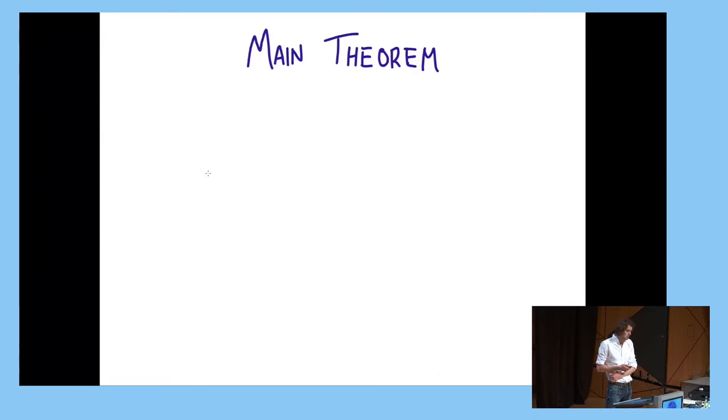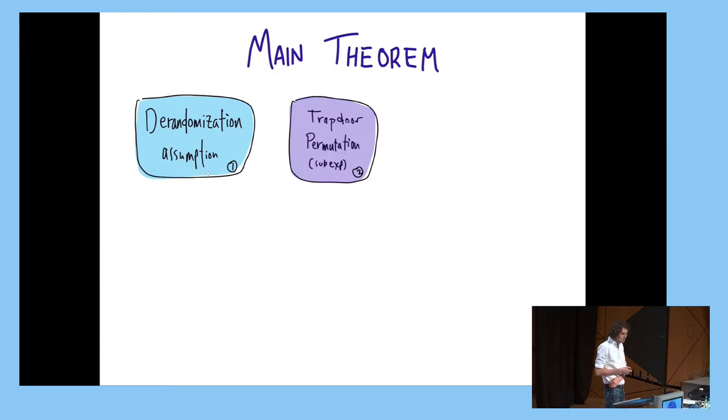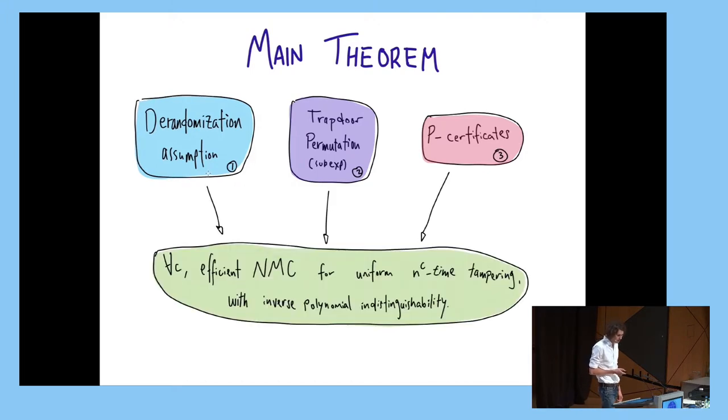So, let's go through these assumptions first. First assumption is the assumption from the derandomization literature that I will elaborate on in a moment. Second, we assume trapdoor permutations, sub-exponentially secure, which I'm assuming most of you are familiar with. And third, we assume something called a P-certificate, which maybe the least of you are familiar with. And assuming all of these things, we have this theorem that says, assuming these things, existence of these objects, you get an explicit, efficient, non-malleable code that holds against any uniform n to the C time tampering with inverse polynomial indistinguishability.